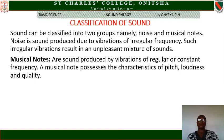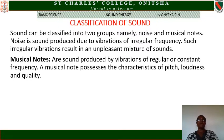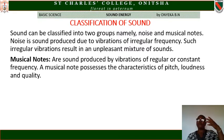Classification of sound: sound can be classified into two groups, namely noise and musical notes. Noise is produced due to the vibration of irregular frequencies; such irregular vibrations result in an unpleasant mixture of sound. When noise is being made — when so many people are talking — you will not hear any meaning from what they are saying, because they are producing sound with different frequencies.